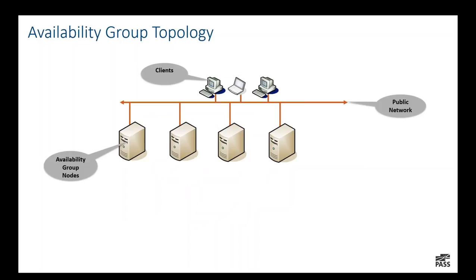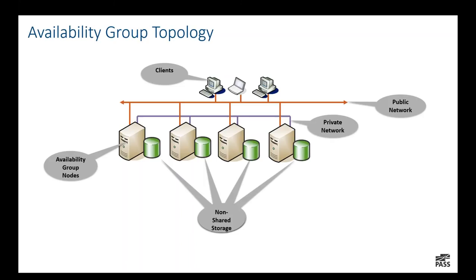Contrast that with a typical Availability Group architecture. The first four components are exactly the same: clients, public network, the AG nodes, and the private network. But the storage infrastructure can be local to each node — one of the great options AGs provide. Advantages include that storage is no longer a single point of failure, there's much less infrastructure to manage, and it's therefore less expensive. A common upgrade strategy is to move from SAN-attached legacy servers to brand-new commodity servers with server flash. You must have a fast storage subsystem to keep up with the exciting new performance enhancements in Always On AGs.